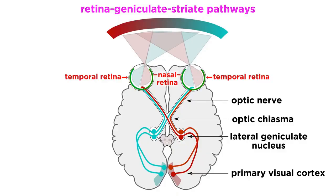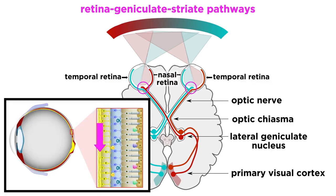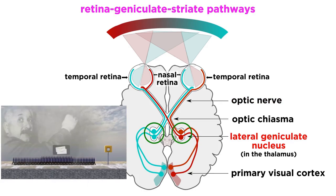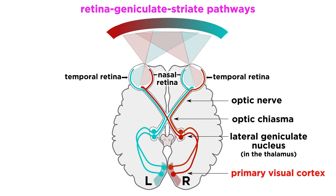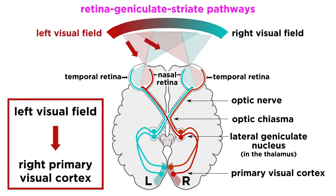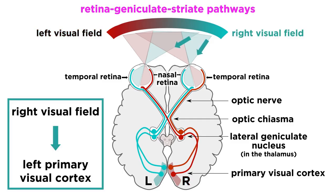Zooming out, action potentials that start at the retinal ganglion cells travel from the retina along retino-geniculate-striate pathways. These begin with axons from the ganglion cells, which leave the back of the eyeball and form the optic nerve. This passes through the lateral geniculate nuclei found in the thalamus, and then continues all the way to the primary visual cortex, which is divided into left and right sections found in the respective hemispheres. All inputs from the left visual field are carried to the right primary visual cortex, and inputs from the right visual field are carried to the left primary visual cortex.